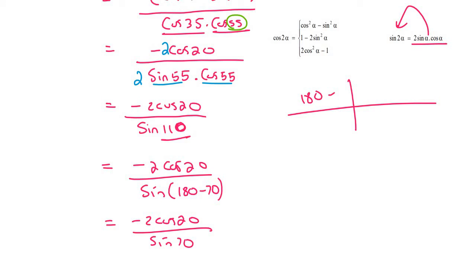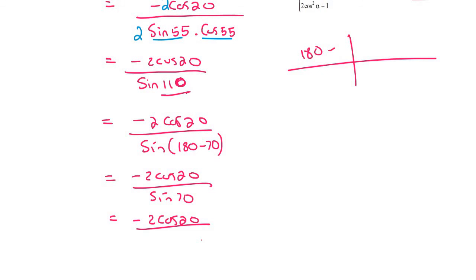Now, my word, this is actually quite a long question. All of a sudden, these two add up to 90. So there's a co-function again. I'm going to change the bottom one into cos of 20. And then all of a sudden, it cancels. And so our final answer is negative 2.